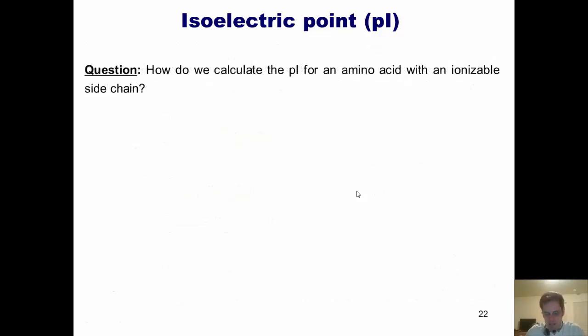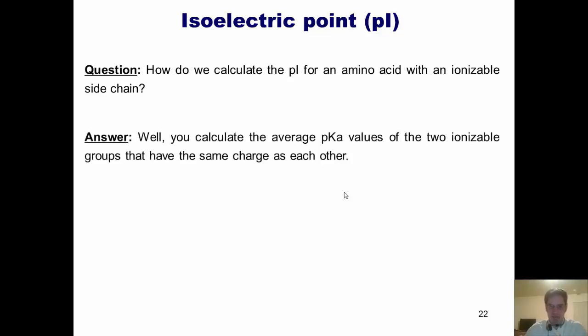Now we arrive at the magical question, issued really by me, but hopefully also by you, my nebulous internet student. How do we calculate the pI for an amino acid with an ionizable side chain? What's the answer? Well, you calculate the average pKa values of the two ionizable groups that have the same charge as each other, obviously.